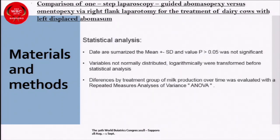Statistical analysis: data are summarized as mean ± SD. A P-value greater than 0.05 was considered not significant. Variables not normally distributed were logarithmically transformed before statistical analysis. The differences by treatment group in milk production over time were evaluated with a repeated-measures analysis of variance (ANOVA).